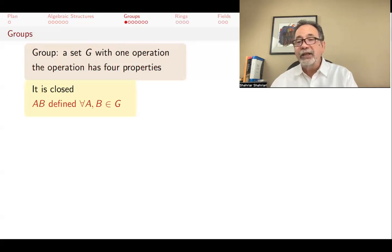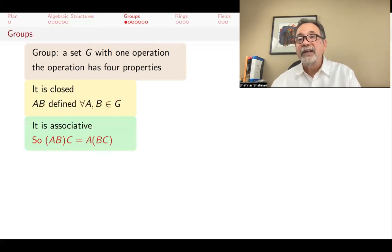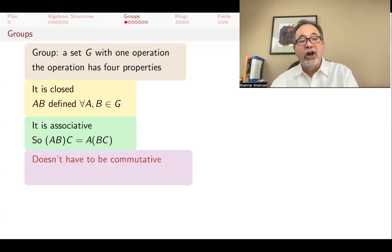It's closed. This means that if you take two elements and apply the operation, multiply the two elements together, the result will still be an element in your set. So AB is another element in your group if A and B are in G. It's associative. That means that AB times C is the same as A times BC. The operation doesn't have to be commutative.